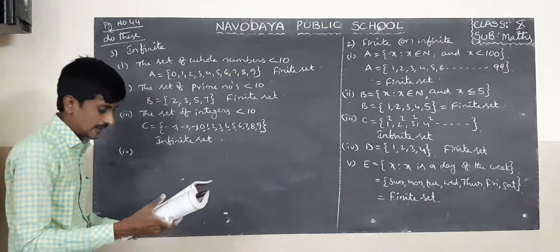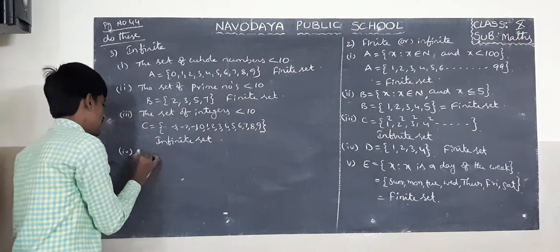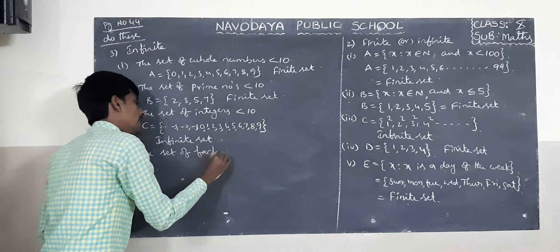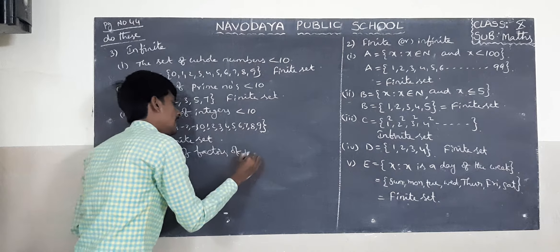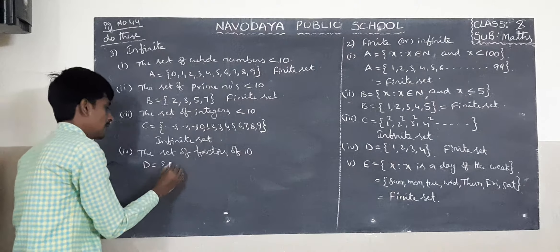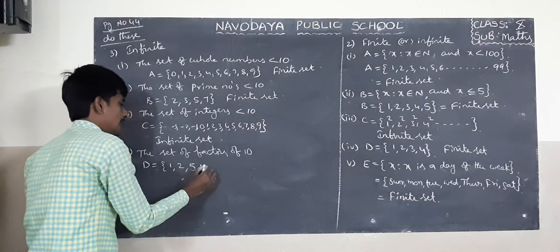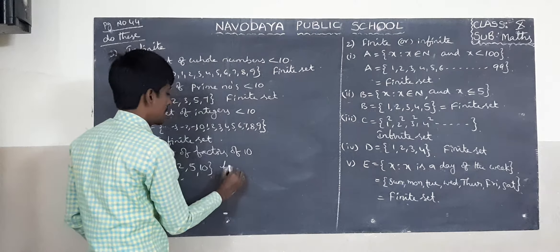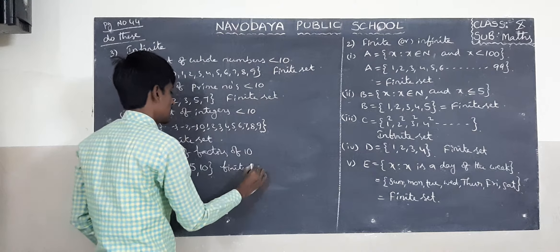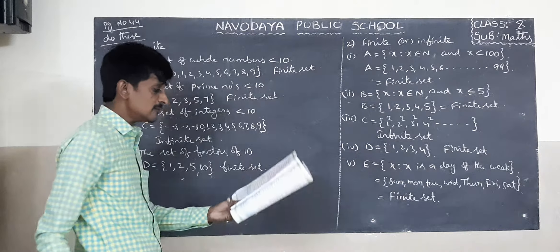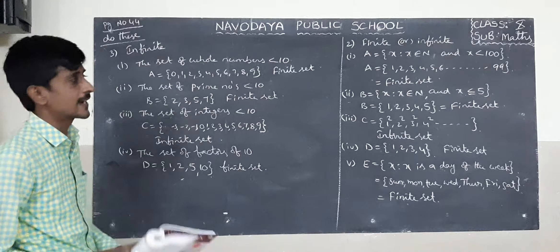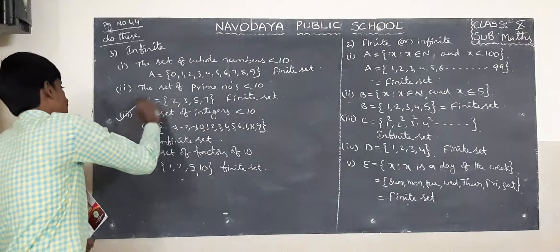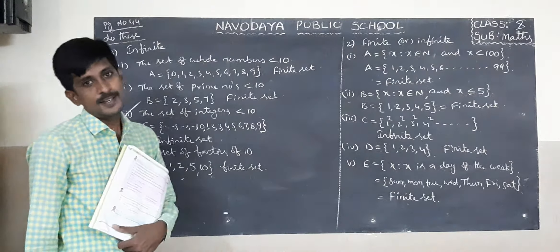Fourth one: the set of factors of 10. What are the factors of 10? 1, 2, 5, 10 — these 4 only. So this is a finite set. The question asks to identify which is infinite — that is the third set.